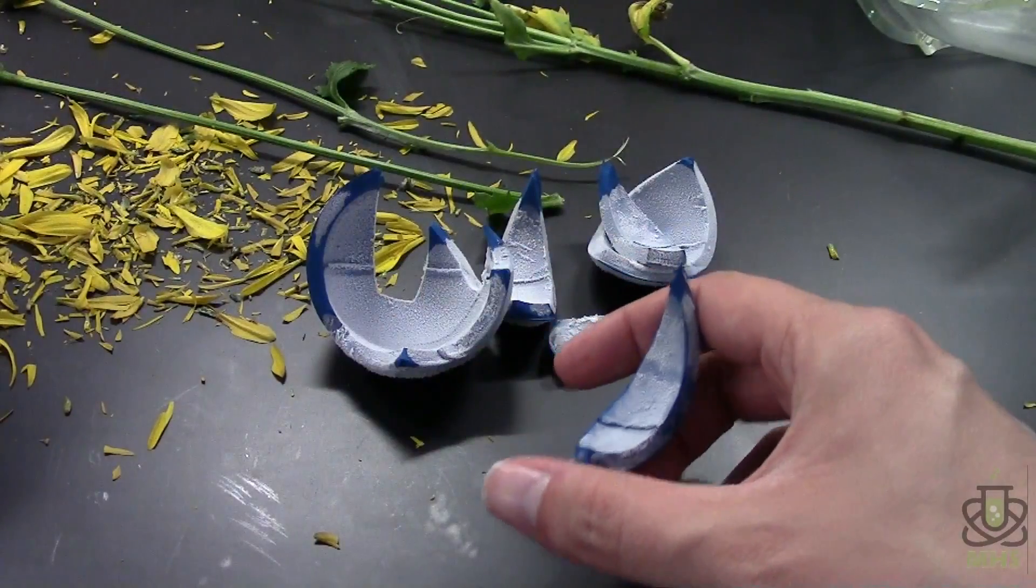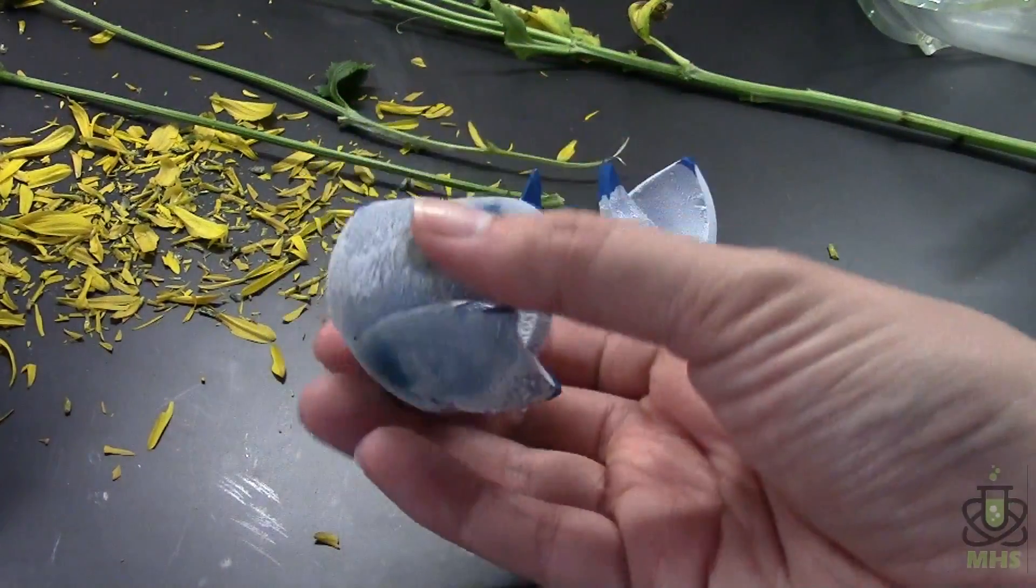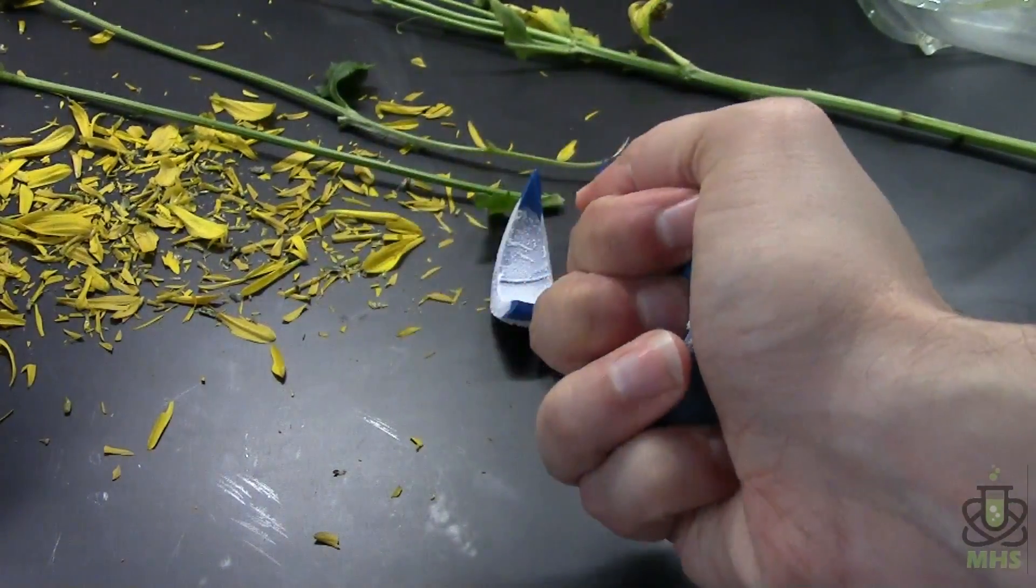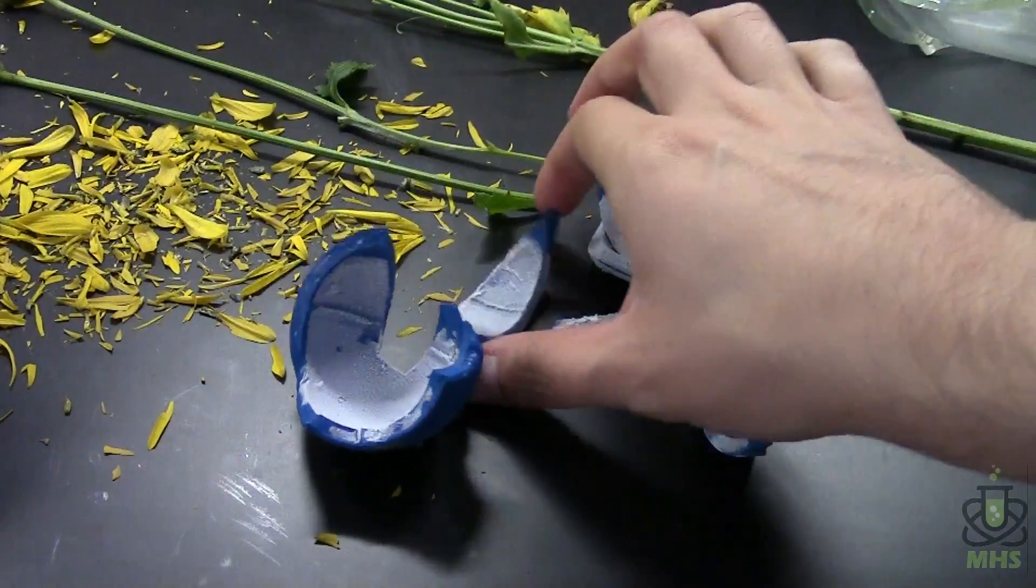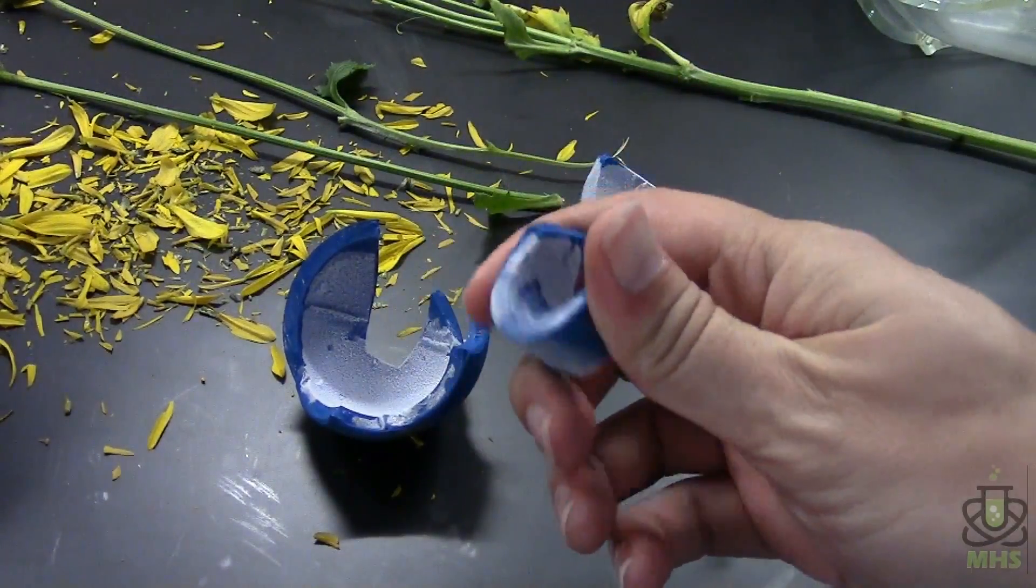And what's crazy is when it was frozen, it was rock hard. I couldn't bend it at all. But now that it's warm again, it's back to being normal rubber. Very cold rubber and useless as a ball, but still rubbery. And I think that's pretty cool that it can recover its properties.